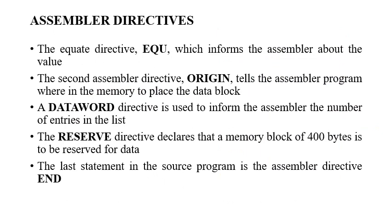In this slide we look at the different types of assembler directives. The first directive is the equate directive, represented as EQU, which informs the assembler about the value to assign to a name. As in the previous example, 'sum EQU 200' indicates that sum will be represented by the value 200.